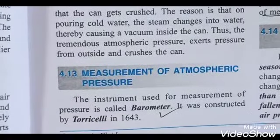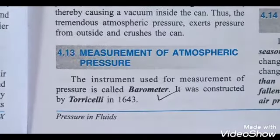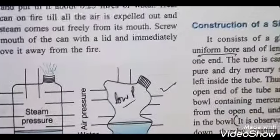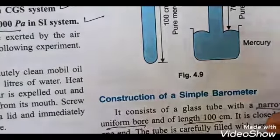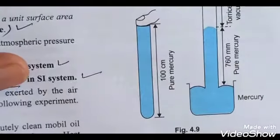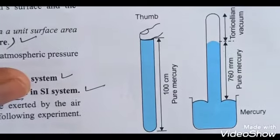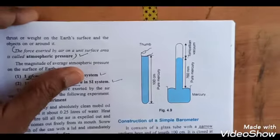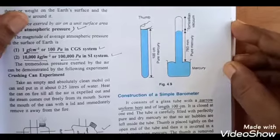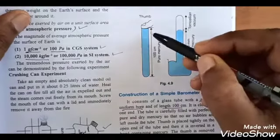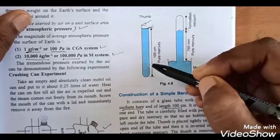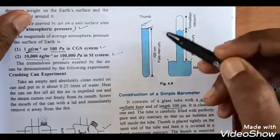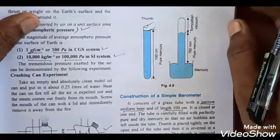Measurement of atmospheric pressure: the instrument used is called a barometer. The simple barometer was made by Torricelli. He took a 100 cm long test tube with uniform bore — uniform diameter — and it was thin. If you take a thick tube, you need more mercury. The tube should be 100 cm long with uniform bore.